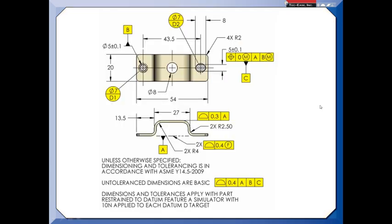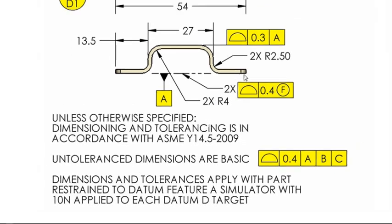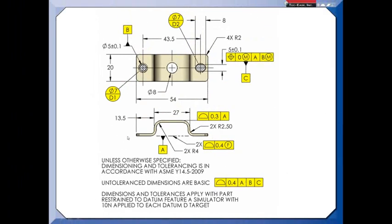This sheet metal part is considered to be rigid because I've referenced the Y14-5 standard. As soon as I did that, all of the fundamental rules are in effect unless I specify otherwise. On this drawing, I have specified otherwise. We see that dimensions and tolerances apply with the part restrained to Datum Feature A Simulator with 10 newtons applied to each Datum D target. Datum Feature A is the bottom of these two tabs, so the simulator would be a nice flat plate. The Datum D targets are two 7mm diameters, D1 and D2, and so I would apply 10 newtons in those two areas and then inspect the part.